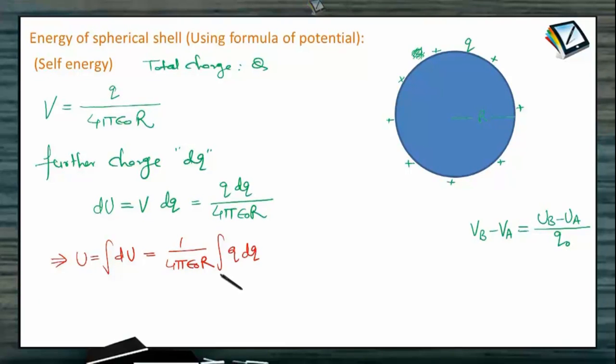And Q is here a variable which is changing from 0 to Q. As we know that Q DQ integration is basically Q square divided by 2 from 0 to Q.